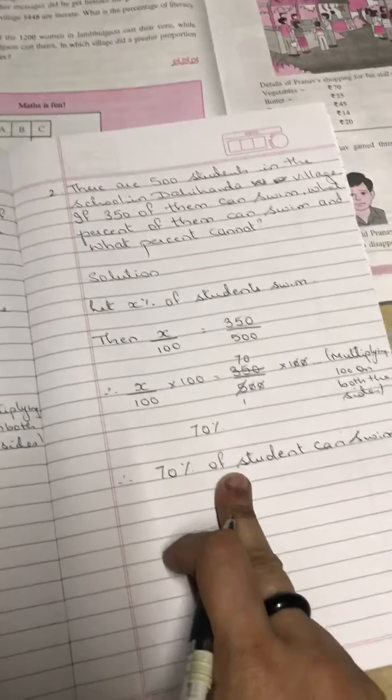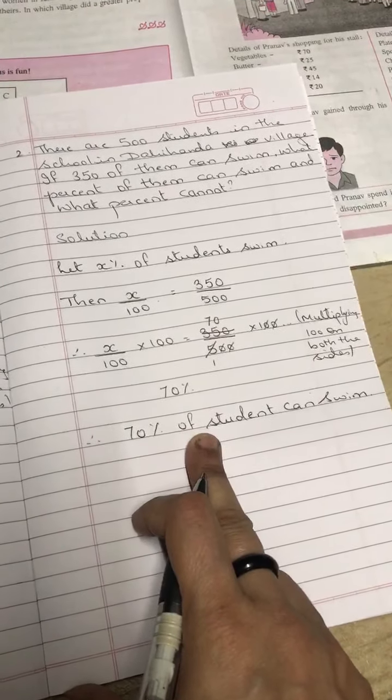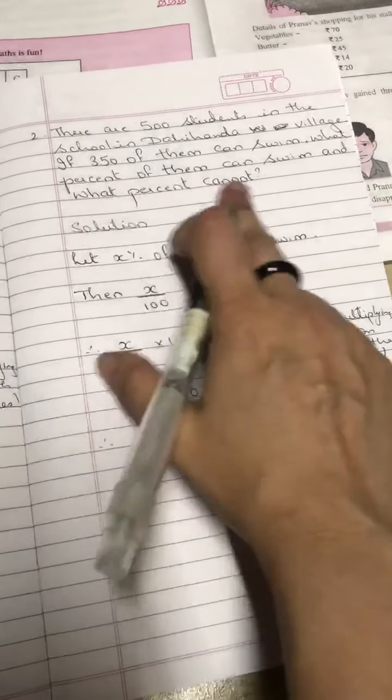Therefore 70 percent of student can swim. Got it students? 70 percent of the student can swim. Now we need to find out what percent cannot.